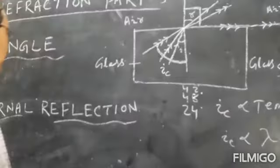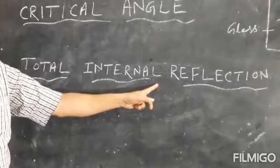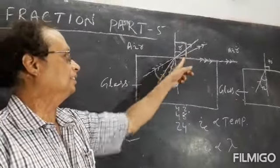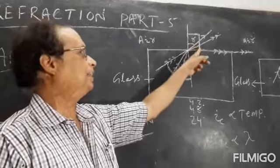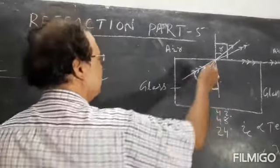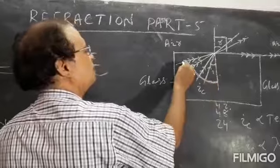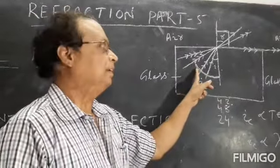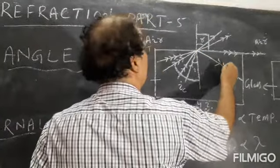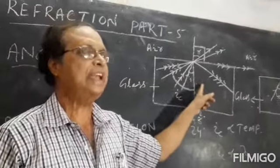Now, what is total internal reflection of light? If you go on increasing the angle of incidence beyond the critical angle, the angle of refraction cannot reach or exceed 90 degrees — instead, light will not pass into the second medium. It will reflect back into the same medium following the laws of reflection.